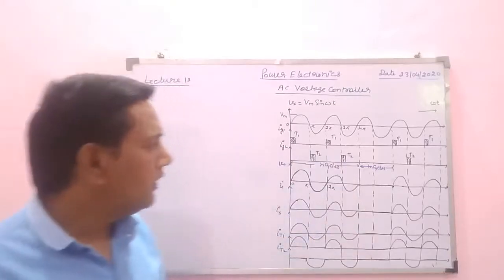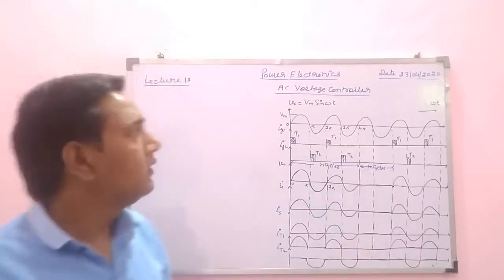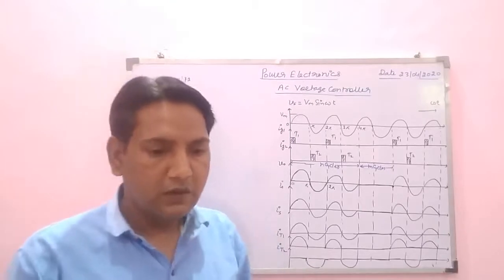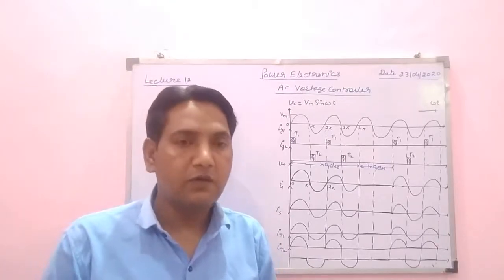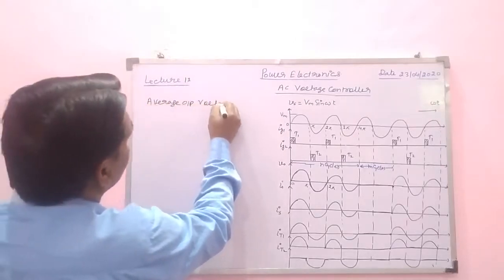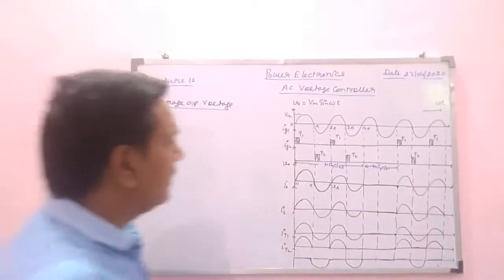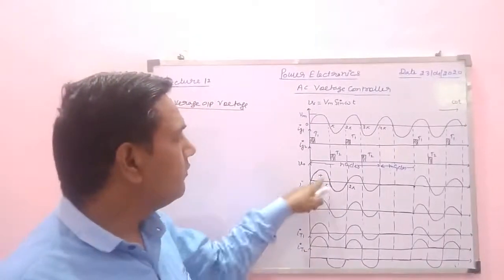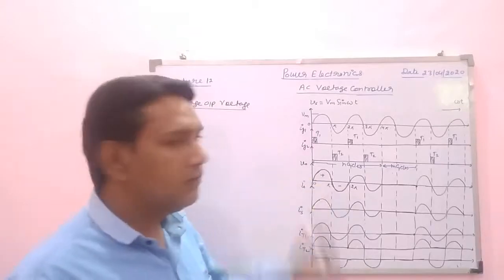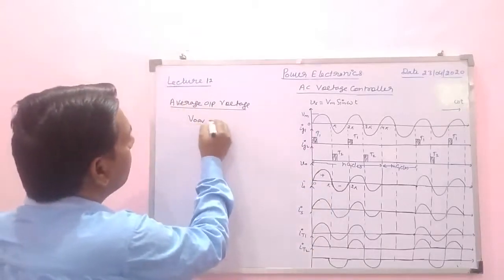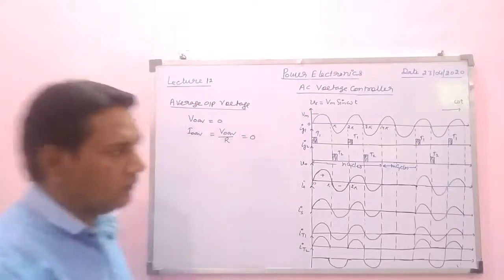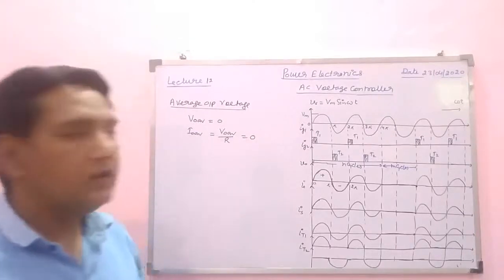We have drawn the waveform for different parameters of the controller and determined the RMS value of output voltage and RMS value of output current. Now we have to determine the average output voltage. The average output voltage consists of one positive half cycle and one negative half cycle, so the average value over the complete cycle will be zero. Therefore V_naught_average equals zero and I_naught_average equals V_naught_average divided by R, which also equals zero.